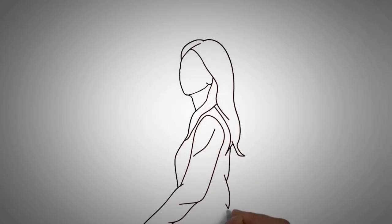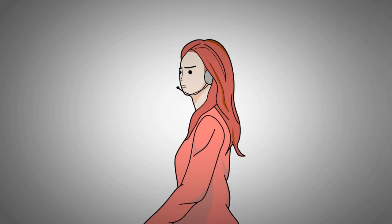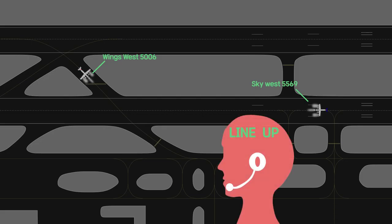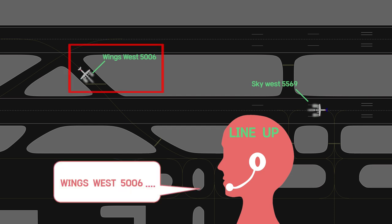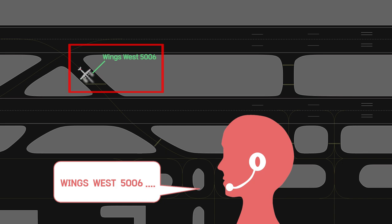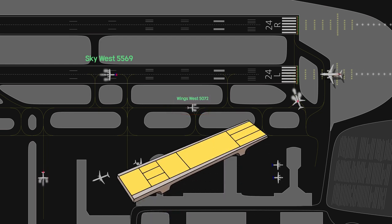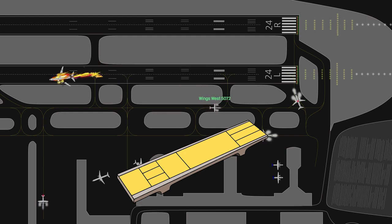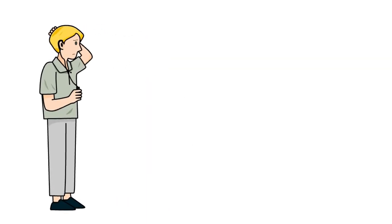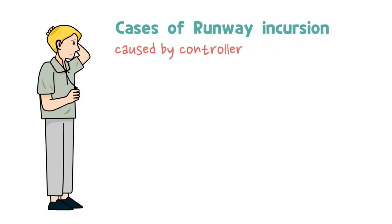However, the biggest cause of this accident was the controller's wrong judgment. The controller forgot the fact that Skywest 5569 was on the runway while trying to communicate with Wings West 5006, who was setting the wrong frequency. Despite having to scan the runway after issuing landing clearance to US Air 1493, she missed the golden time because she was eager to locate Wings West 5072 on the taxiway and find the strip. Let's think of the cases where the controller is a cause for runway incursion accidents.